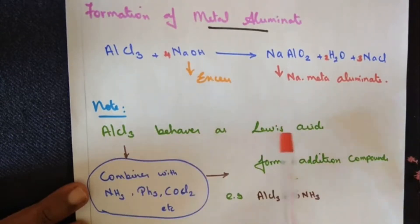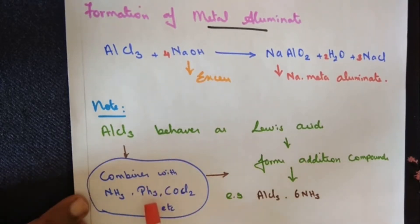Anhydrous aluminium chloride, AlCl3, behaves as a Lewis acid. What's the meaning of Lewis acid? It accepts the lone pair of electrons or electron pairs. Thus accepting it forms addition compounds. For example, AlCl3 with 6 times the ammonia molecule. Similarly it combines with phosphine pH3, carbonyl chloride, etc. So anhydrous AlCl3 behaves as a Lewis acid and forms addition compounds. Thank you.